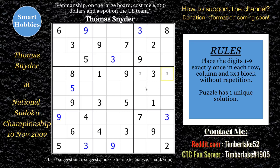He was able to solve a 3 at this point, looking at row 5, column 1. He went back and saw it must be a 3 right there. Then he saw that a 4 in column 3 limited the 4s to two spots, so he marked those as 4s. Then following the 4s down through block 9, row 9, he marked two more 4s in that area.